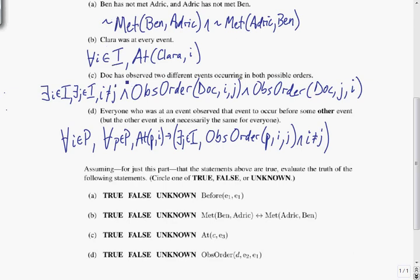None of our statements here about Ben meeting Odrick or Clara being at every event, or even Doc observing two different events occurring in both possible orders, or everyone who was at an event observed that event to occur before some other event. None of those statements have any bearing on whether an event can occur before itself. So even though we might intuitively think that should be false, we haven't stated anything to make it false. So it's unknown.